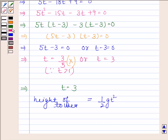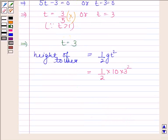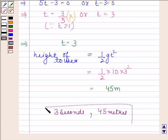By substituting value of g and t, we get 1 by 2 into 10 into 3 squared. And this is equal to 45 meters. Hence our required answer is 3 seconds and 45 meters. This completes the session. Thank you.